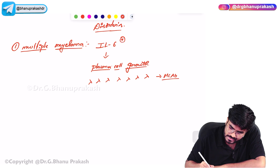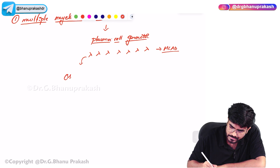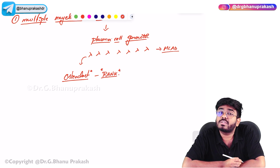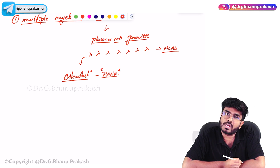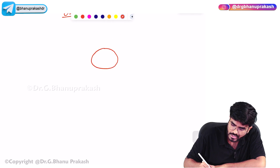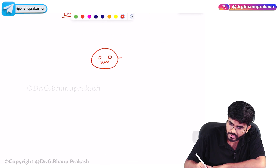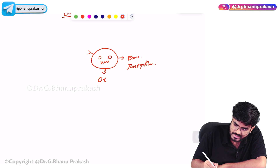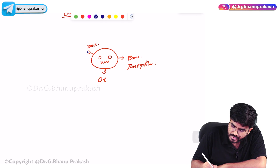These antibodies will go to the osteoclast. On the osteoclast, there is a receptor called the RANK Receptor. Normally, the RANK Receptor is stimulated by RANK Ligand. Imagine this is the osteoclast — the bad guy — which causes bone resorption. On its surface, there is a RANK Receptor, activated by RANK Ligand.